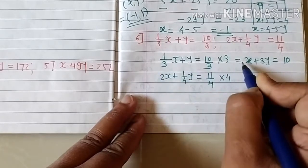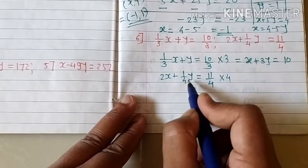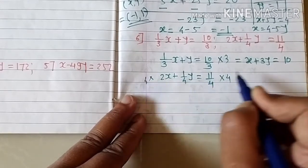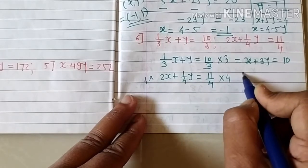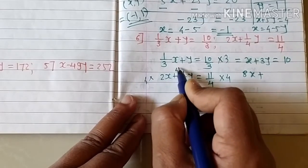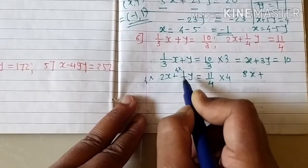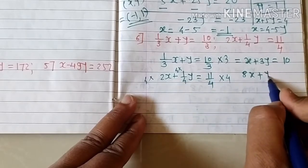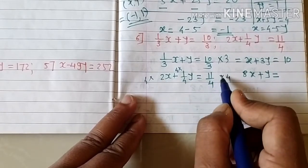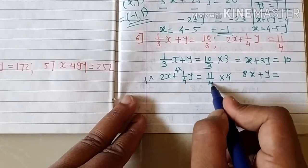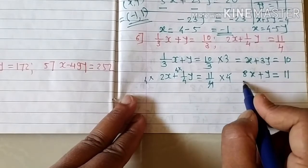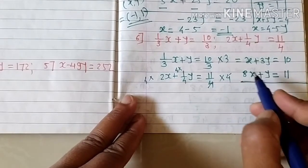When we multiply equation two by 4: 4 times 2x gives 8x, and 4 times one-quarter gives y (the 4 cancels). Multiplying the right-hand side by 4 also cancels to leave 11. After simplification we proceed to solve.